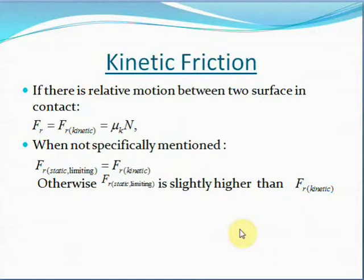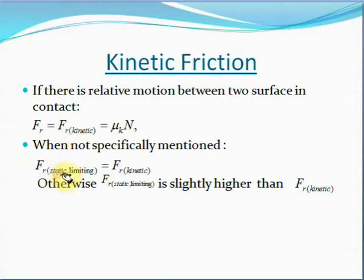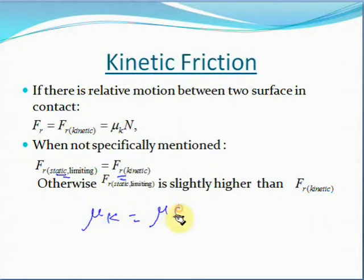Generally, the value of static friction is slightly higher than the value of kinetic friction. However, if nothing is specifically mentioned, we can take the value of static friction as equal to the value of kinetic friction, which means μK is equal to μS — that is, the coefficient of kinetic friction equals the coefficient of static friction.